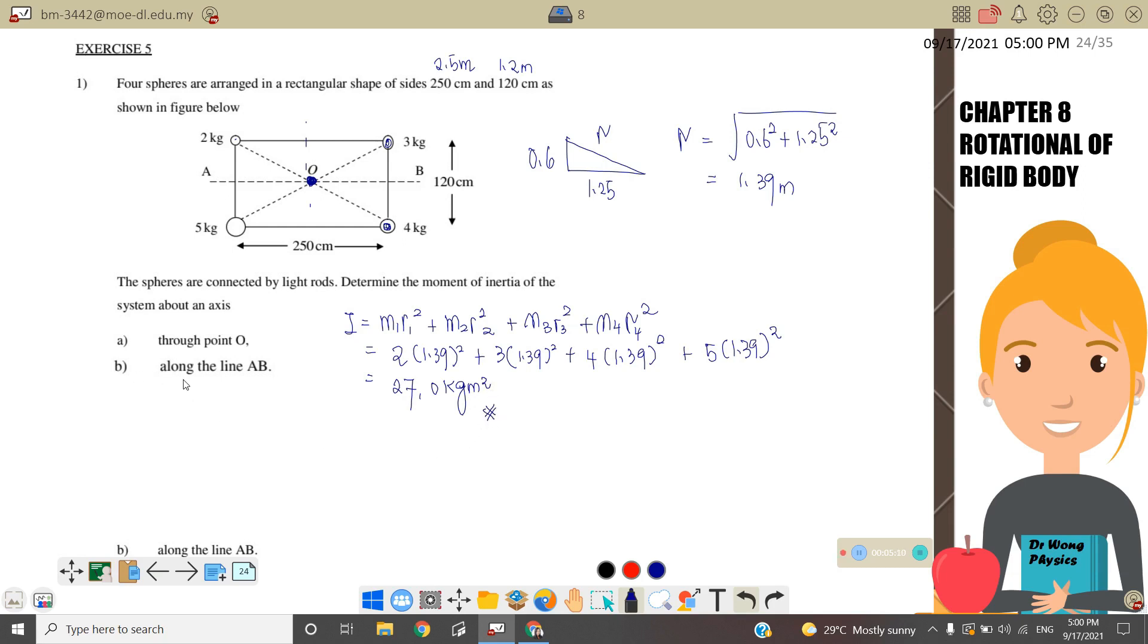Next, if the rotational axis is along line AB, this is the rotational line.